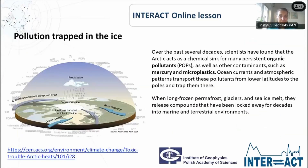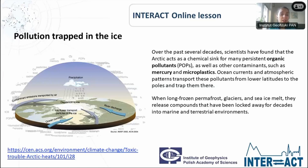Pollution trapped in ice is another topic concerning the Arctic. On one side, pollution comes to the Arctic from the rest of the globe through different pathways — precipitation, river discharge, ocean currents, or contamination transported by air. On the other side, during some periods of time, pollution was accumulated on icy surfaces and trapped into the ice. Now, when the Arctic ice is melting, those pollutants are released into the atmosphere. Unfortunately, both transportation pathways have the same harmful impact on the natural environment.